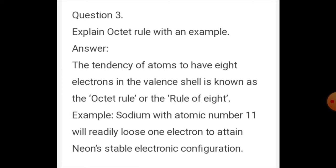Question number 3: explain the octet rule with an example. The tendency of atoms to have 8 electrons in the valence shell is known as the octet rule or rule of 8. For example, sodium with atomic number 11 will readily lose one electron to attain the neon stable electronic configuration.